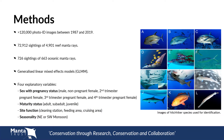To achieve this, associated hitchhikers were analysed from over 120,000 manta ray photo ID images between 1987 and 2019. This totalled 72,912 sightings of 4,901 reef manta rays and 726 sightings of 663 oceanic manta rays. Logistic generalised linear mixed models were used to investigate relationships between the presence of the most frequently observed hitchhiker species with each manta ray species and four explanatory variables: sex with pregnancy status, maturity status, site function and seasonality.